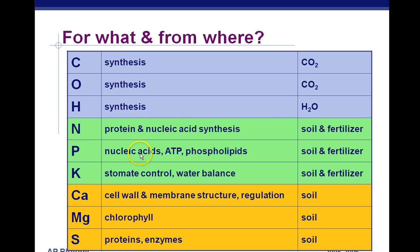Phosphorus is used for nucleic acids — the sugar-phosphate backbone of DNA and RNA contains phosphorus. We also have ATP, adenosine triphosphate, which has three phosphate groups. Then there are phospholipids: they have a polar phosphate head attracted to water and hydrophobic fatty acid tails. These arrange themselves into a bilayer for cell membranes, so without phosphorus you couldn't make phospholipids or cell membranes. Potassium, discussed in Chapter 36, is involved with stomate control, water balance, and regulating how much water moves in and out of the plant via osmosis.